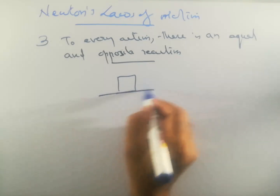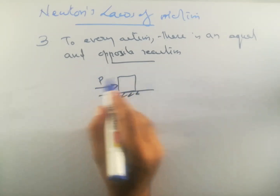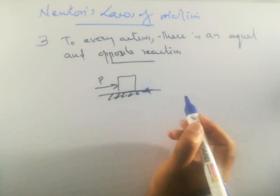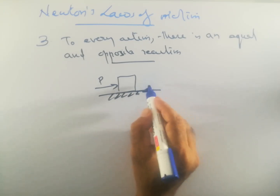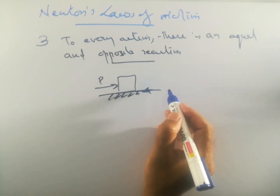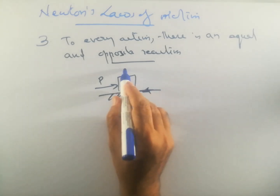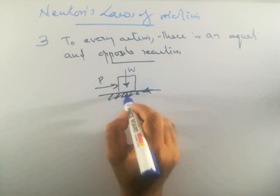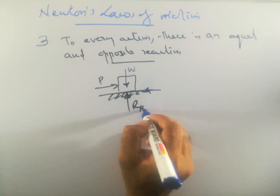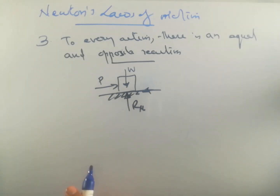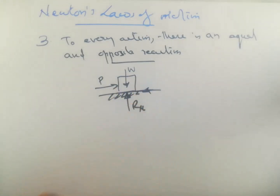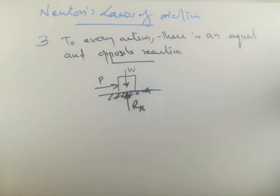If a body is resting on a surface and weight W is acting vertically downwards, then the surface below will offer a normal reaction RN which is equal and opposite, so that the body will be in equilibrium. That is, to every action there is an equal and opposite reaction.